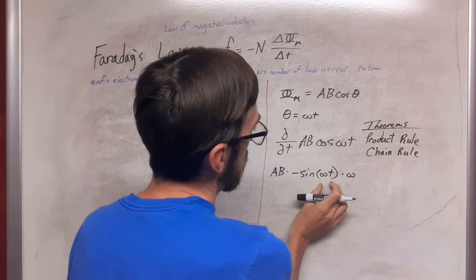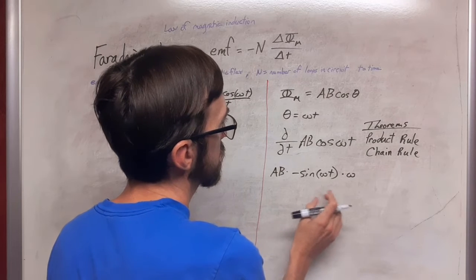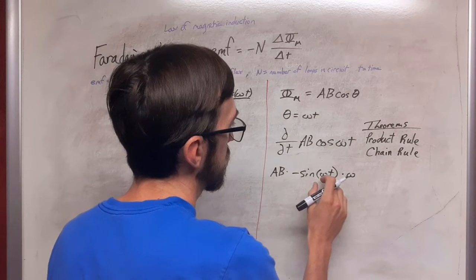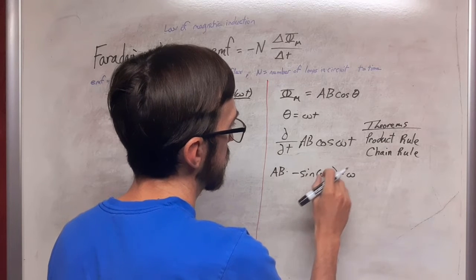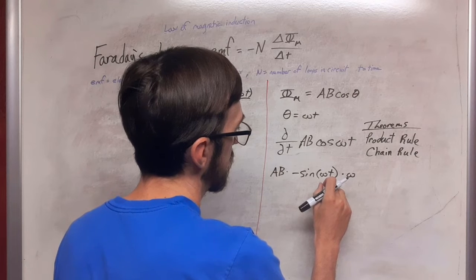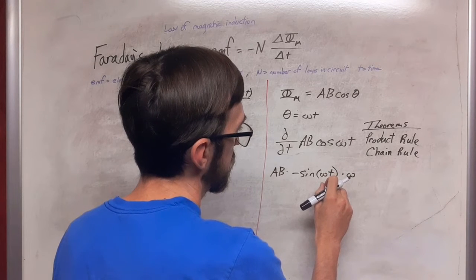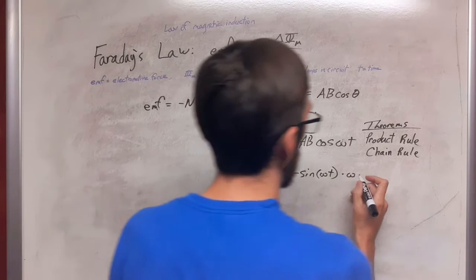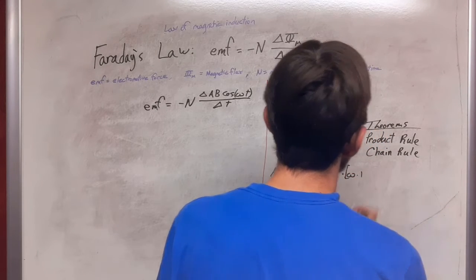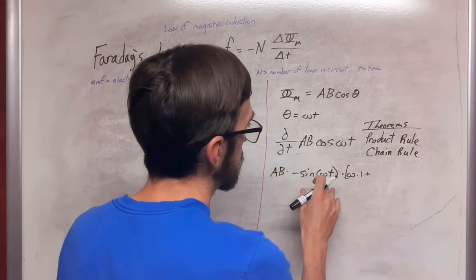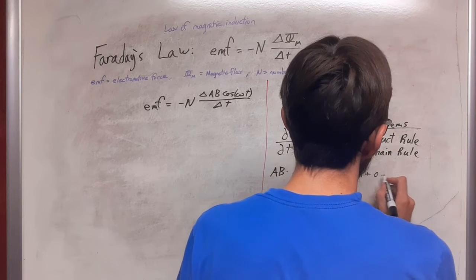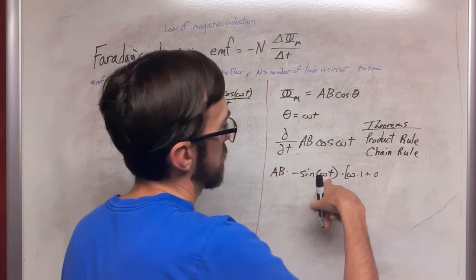This is also a product and so we're really doing the product rule again. So we have omega t times the derivative of t which is 1 plus the derivative of omega which is 0 times the function.